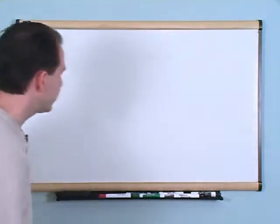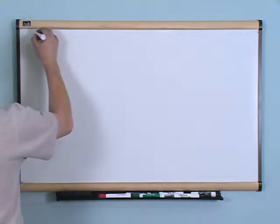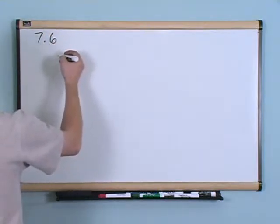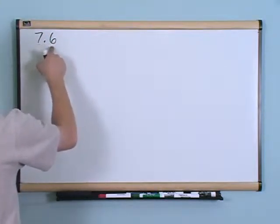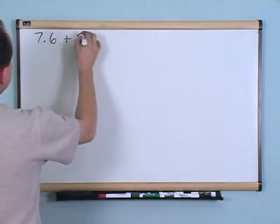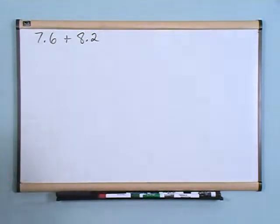Let's say you had a problem like 7.6 — that's a decimal — plus 8.2. So 7.6 plus 8.2.